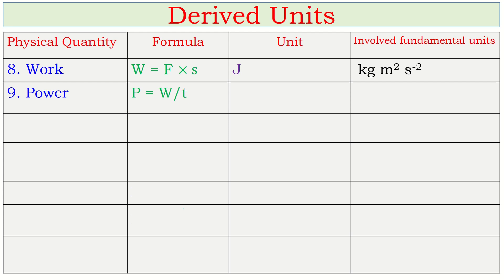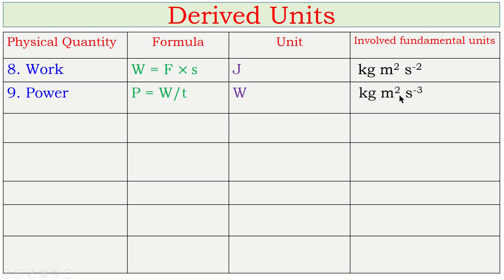Next: power. Power = work ÷ time. Work is in joule and time in second, so unit is joule per second. Named after scientist Watt, the fundamental units involved are: joule is kg·m²·s⁻², divided by second gives kg·m²·s⁻³.